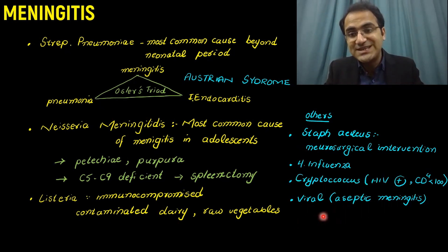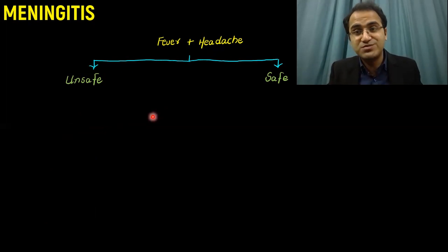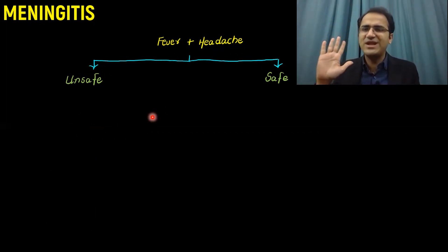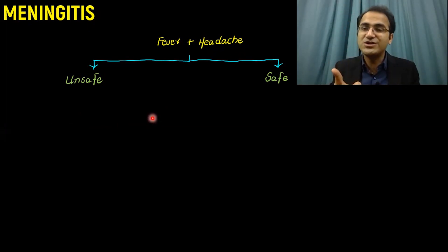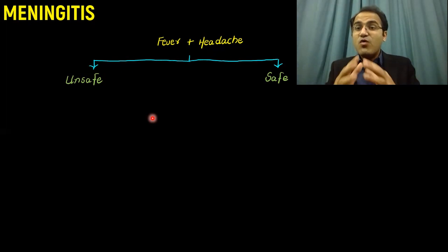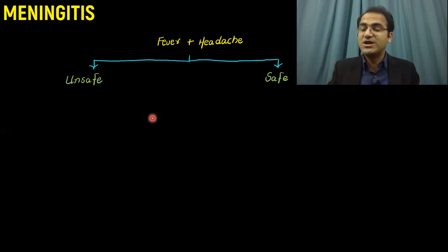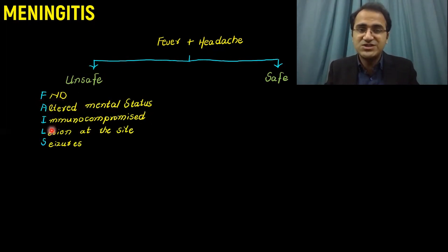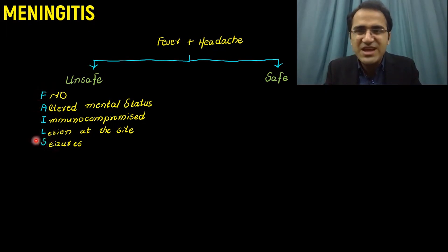When you suspect meningitis, you must decide whether to perform lumbar puncture. Use the FAILS mnemonic for patients unsafe for lumbar puncture: Focal neurological deficit, Altered mental status, Immunocompromised, Lesion at the needle site, Seizures. If the patient has any one of these, you cannot perform lumbar puncture, as they may have a space-occupying lesion and LP risks causing brain herniation and death.